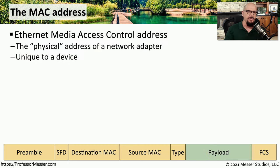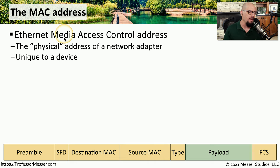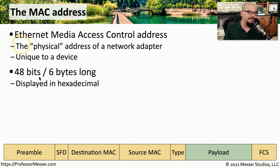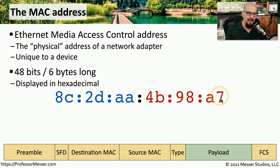Let's get more information on these MAC addresses. Inside of this ethernet frame is a destination MAC address and a source MAC address. That term MAC stands for Media Access Control. It is the physical address of your ethernet adapter, and every device has a unique MAC address. Ideally, there would not be another MAC address in the world that matches the MAC address on your ethernet card. The MAC address is 6 bytes long or 48 bits long, and it's common to show the MAC address in hexadecimal. For example, this is a very common MAC address: 8C2DAA4B98A7.